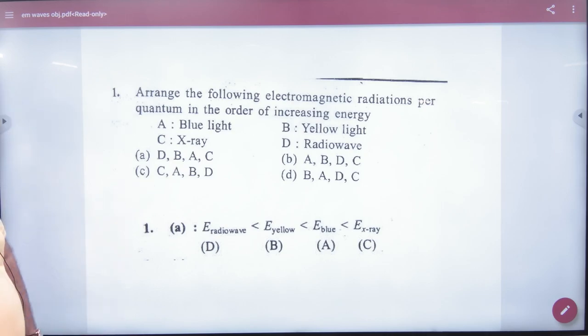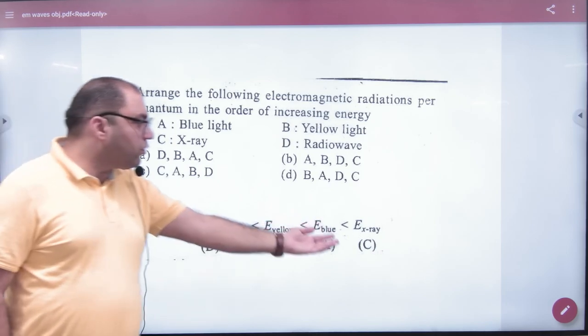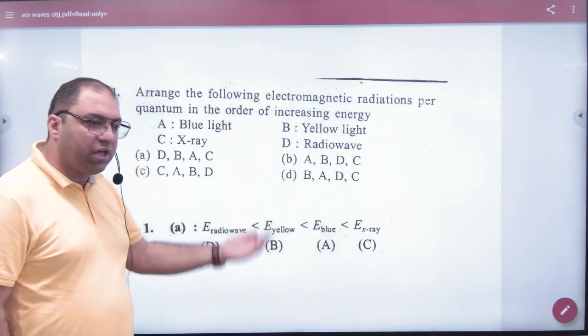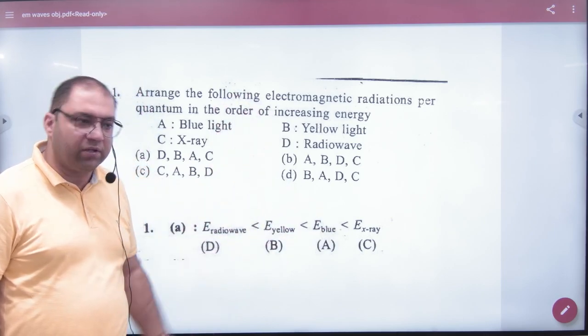Look at this. There is no benefit of seeing this. If you want to give an explanation, the X-ray frequency is very high, then blue, then yellow, then radio wave. That's why this is the energy sequence.